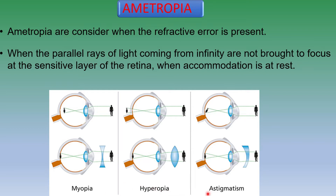So myopia, hypermetropia, and astigmatism are considered under Ametropia. We will discuss more about myopia, hypermetropia, and astigmatism in the next coming videos shortly.